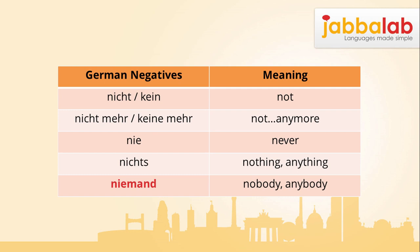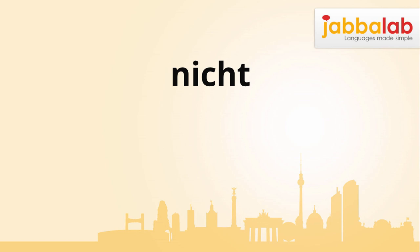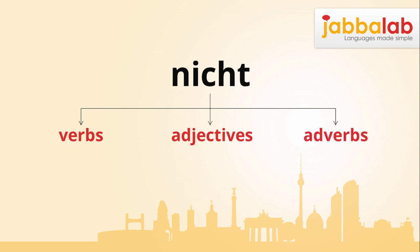One of the first confusions you will encounter when learning German is: what's the difference between 'kein' and 'nicht', and when should you use them? The quick answer is that 'nicht' is used in any situation except in direct relation to a noun — then you use a form of 'kein'. Therefore, 'nicht' is used with verbs, adjectives, and adverbs.